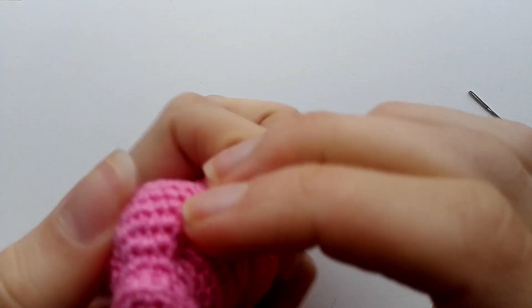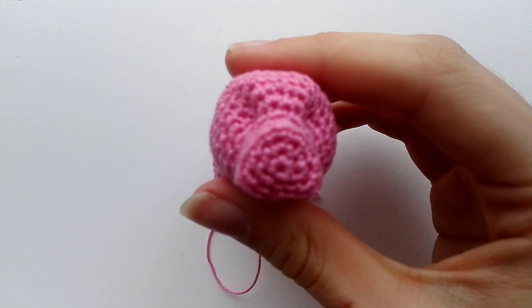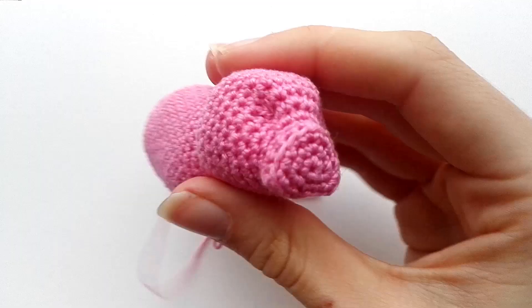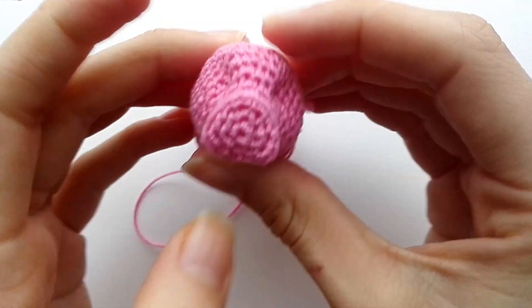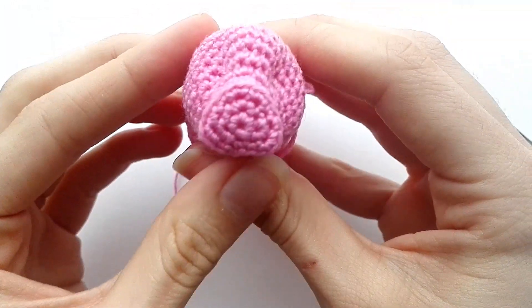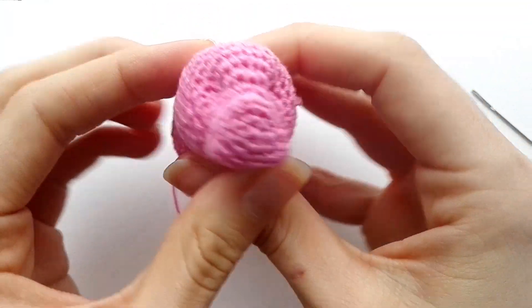So here we can see we now have a pig that doesn't have a fully round head anymore. It has a little shape.